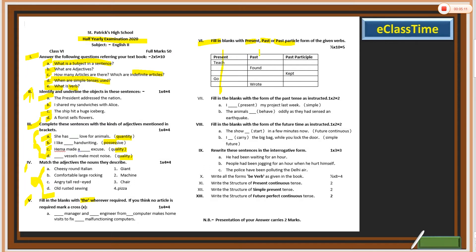This is a three-column chart: present form, past form, and past participle. For example, if 'teach' is given, what is the past tense and the past participle? For 'found,' what is the present form and the past participle? This chart is in the book. If you read it, you will find the forms there. Make the same type of chart and fill in the answers.